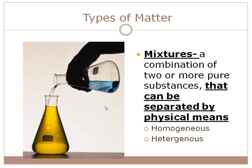Now we get to mixtures. Mixtures are two or more substances mixed together — you can have compounds mixed together or elements mixed together. The key is they can be separated by physical means: we mix them together physically and we can unmix them physically. There are two types: homogeneous and heterogeneous.